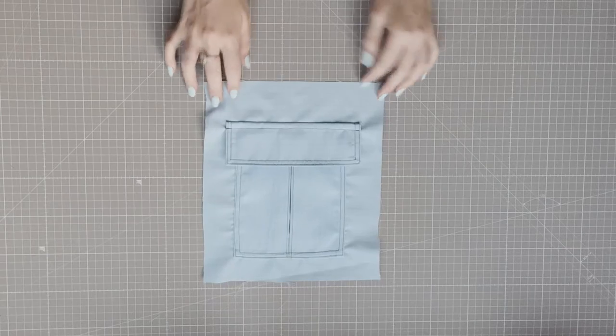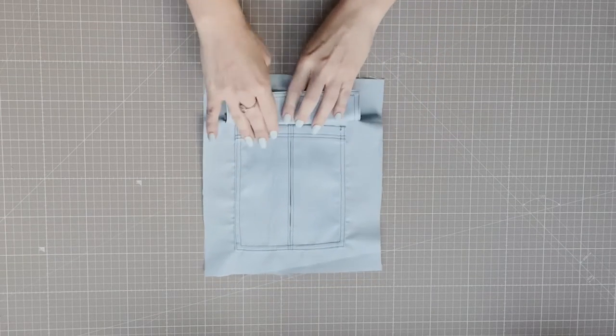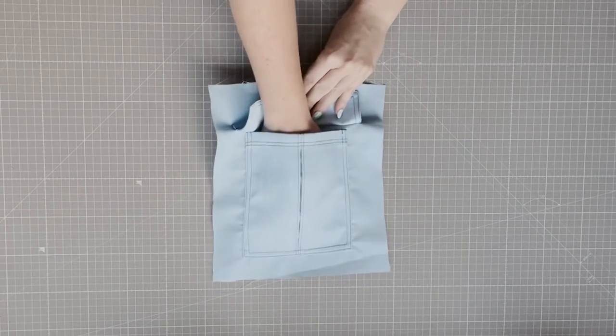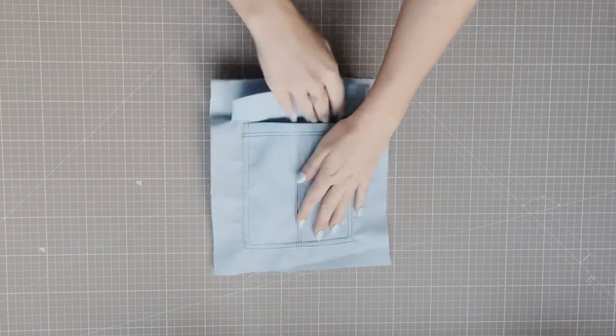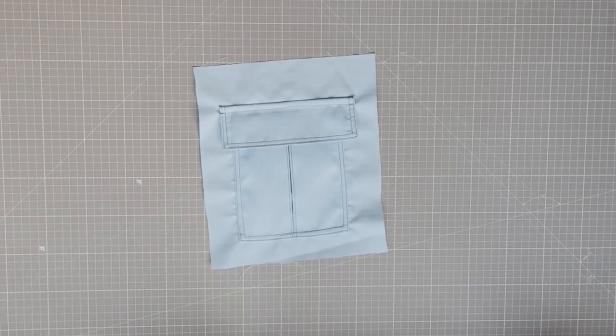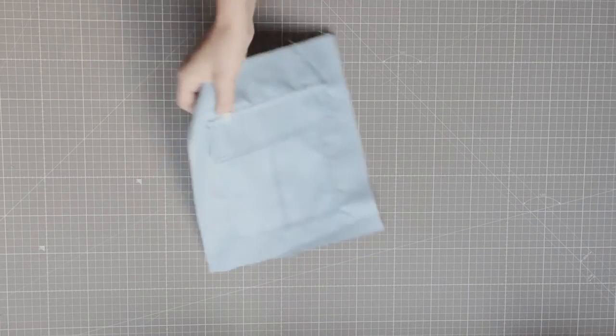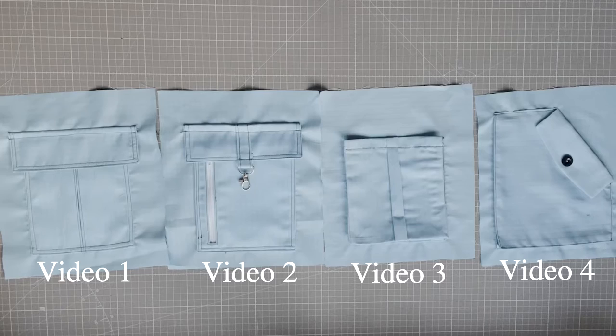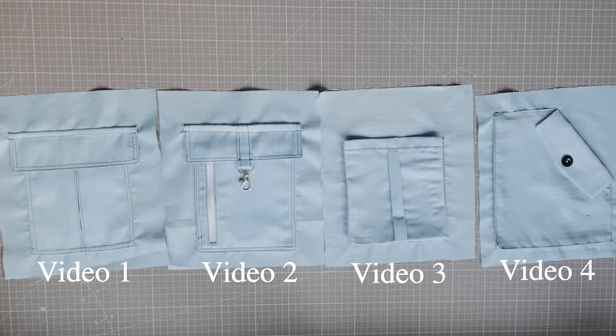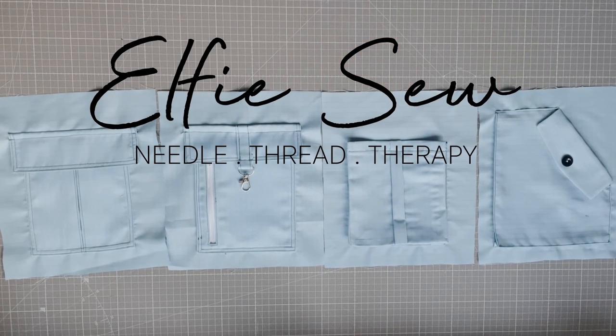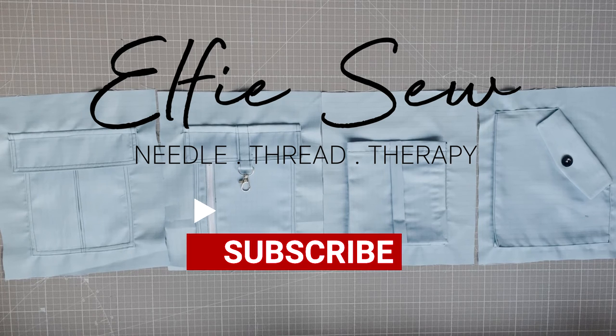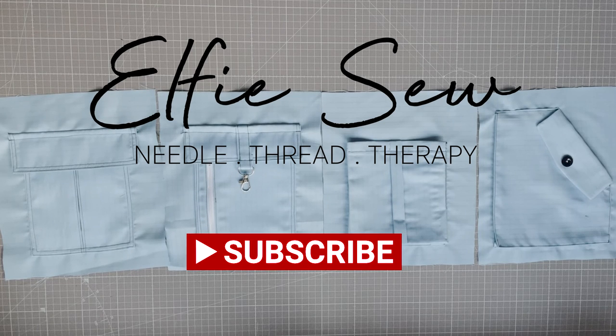So there you have a flat cargo pocket with pleat and flap. To get a free download of the pocket pattern hit the link below. Keep watching to see the additional cargo pocket variations. I will be showing you how to include zippers, hooks, side pockets and 3D pockets. And of course if you have learned something please hit like and subscribe to stay notified of new tutorials. Happy sewing!